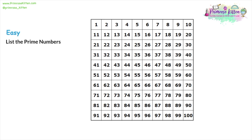Before we list the prime numbers, we need to know what prime numbers are. A prime number is defined as a number with exactly two factors. What a factor means is that the number can only be divided by two different numbers, and more precisely, those two numbers have to be whole numbers — you can't use decimals.